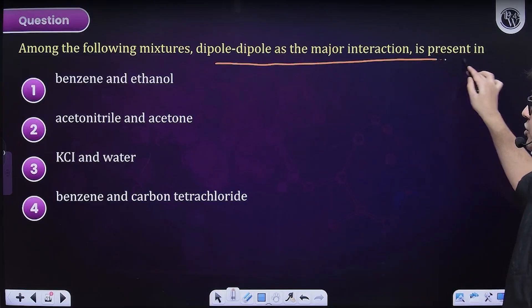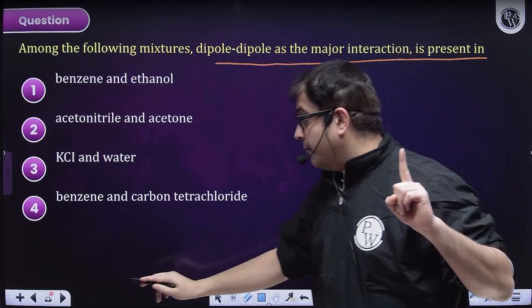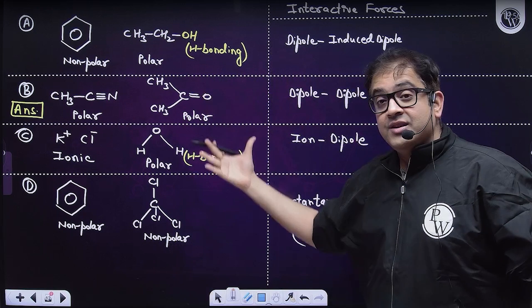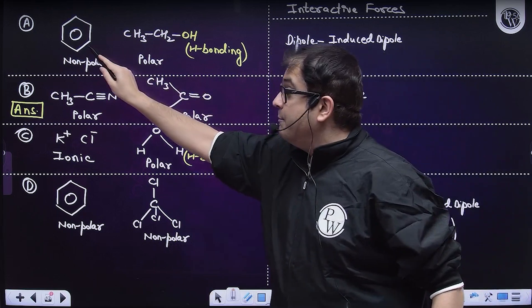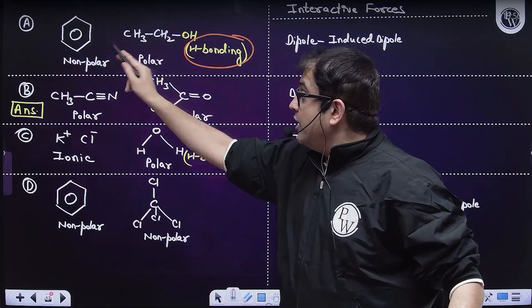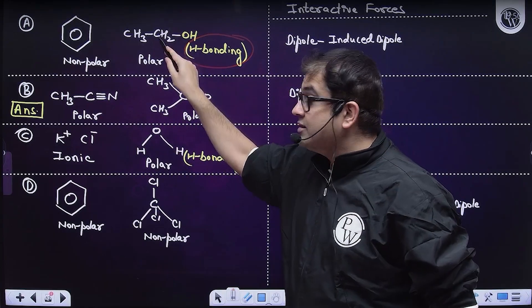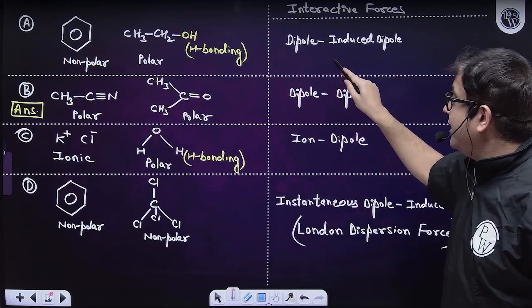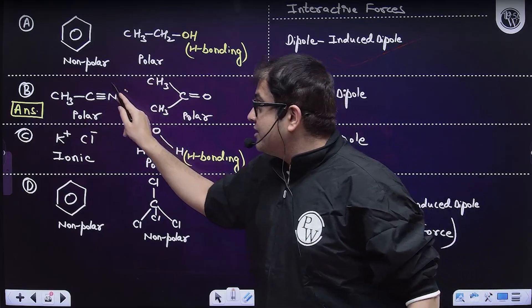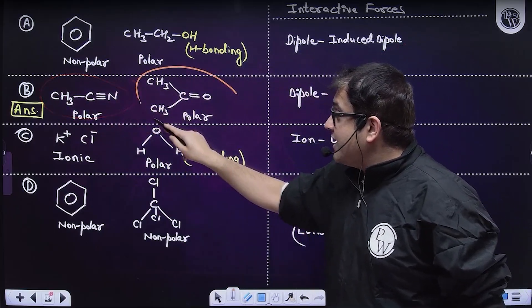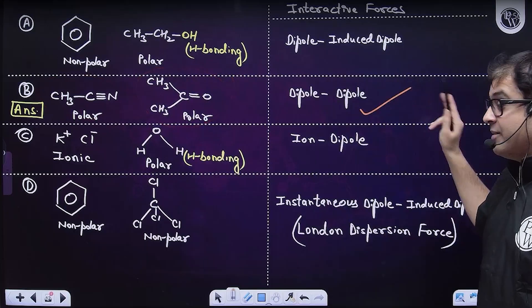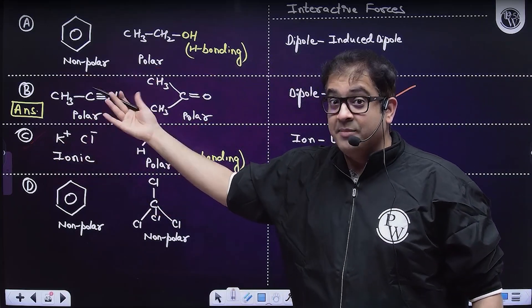The next question says, among the mixtures, which of the following is having dipole-dipole attraction? All states of matter are attracted to each other through some intermolecular forces of attraction. Let us check what intermolecular interaction they have. Benzene is a non-polar molecule. Ethanol is a polar molecule with strong hydrogen bonding attraction. These molecules will have dipole-induced dipole interaction.